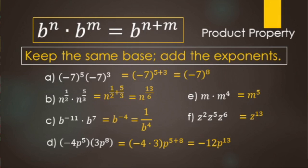To summarize the product property: keep the same base and add the exponents. Here are all the examples that fit the product property — or product rule — of exponents that we covered in this video.